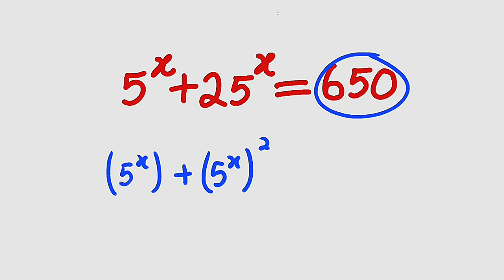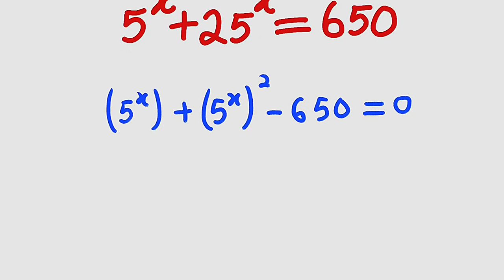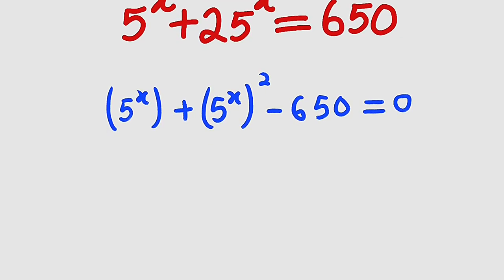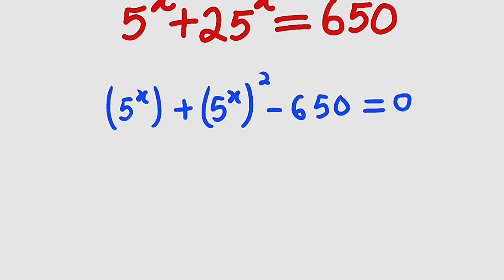And you can bring this one in so it becomes negative 650. This is equal to 0. If you observe, this is a quadratic equation in terms of 5 to the power of x. This can be factorized.